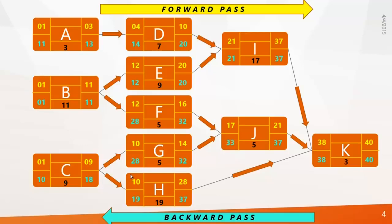Now we are done calculating Early Start, Early Finish, Late Start, and Late Finish for all activities. To clarify the difference: for Activity A, you can start it on any day between Day 1 and Day 11. Delaying an activity between its Early Start and Late Start won't affect the total project duration. This period is called Float or Total Float — it is the period that an activity can be delayed.